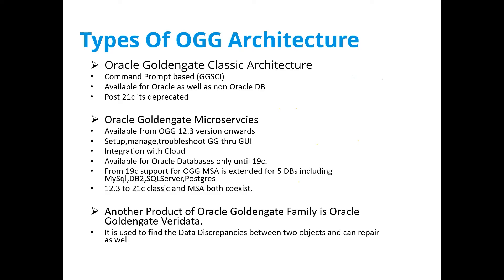There is one more product in the GoldenGate family called Oracle GoldenGate Veridata. Veridata is a separate licensed product that is part of the Oracle GoldenGate family. Any question or issue related to GoldenGate will come from these three things only: Classic Architecture, Micro Services Architecture, and Veridata. Veridata is a product that, as the name suggests, verifies data. GoldenGate replicates data, but errors can occur — some transactions may not be applied.